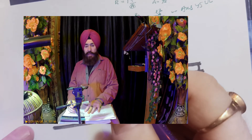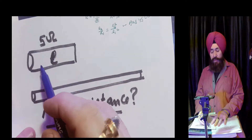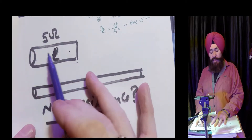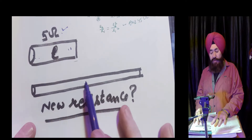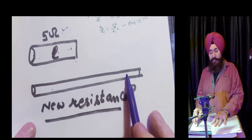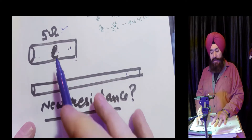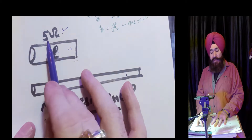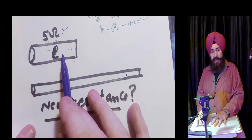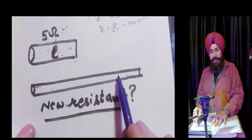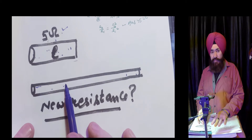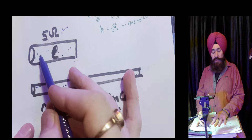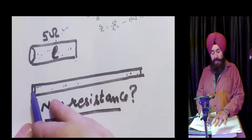I am having a resistance of 5 ohm. It is cylindrical in shape. If it is drawn so that its length becomes doubled, what happens to the new resistance? Keep in mind when it is drawn so that the length is doubled, there is an effect on the area of cross section.